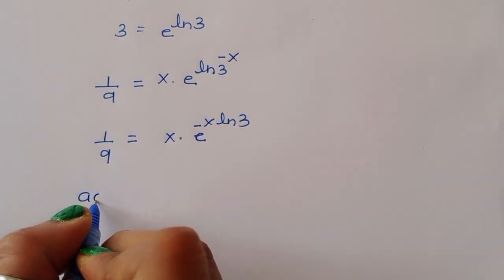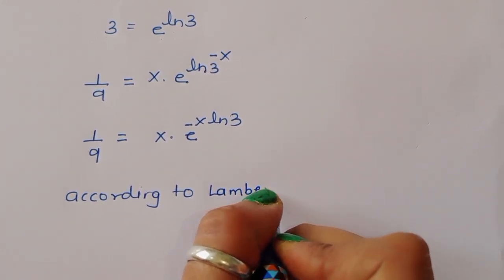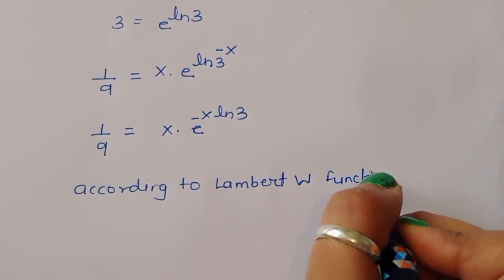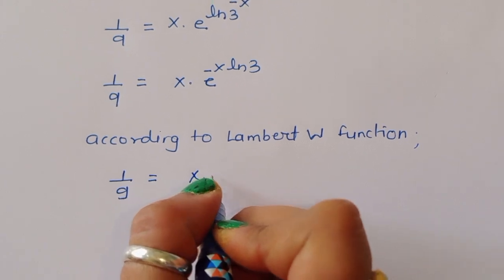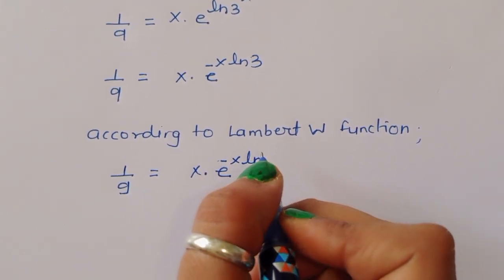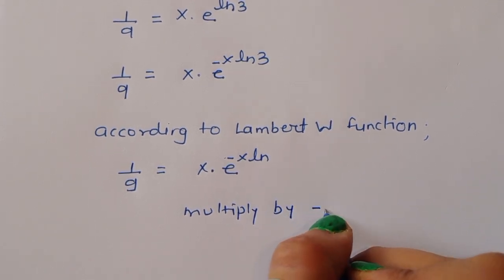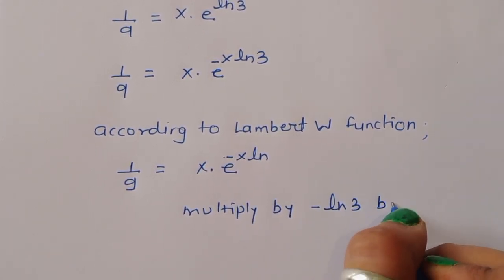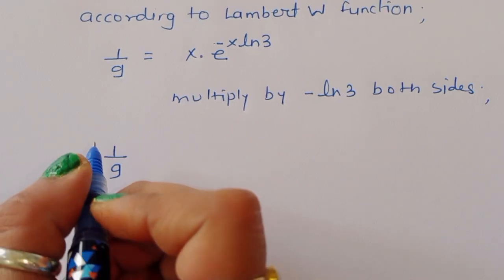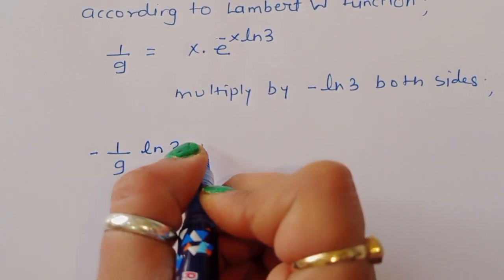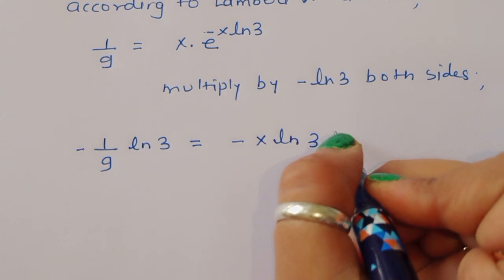Now according to the Lambert W function, we can write 1/9 = x times e^(-x·ln3). Multiply both sides by minus ln3, and we get: minus (ln3)/9 = minus x·ln3 times e^(-x·ln3).